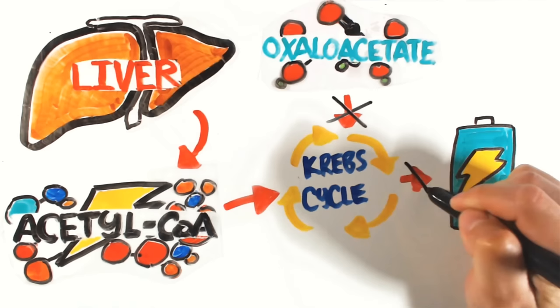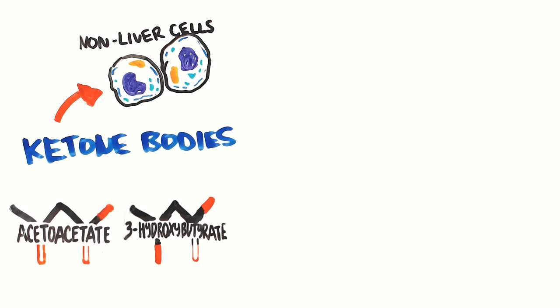Now your liver has all of these acetyl-CoA lying around, so it decided to break it down into two substances called acetyl acetate and beta-hydroxybutyrate, which are known as ketone bodies. It sends them into the bloodstream where other body cells pick them up, convert the ketone bodies back into the acetyl-CoA into the Krebs cycle, and energy is produced.